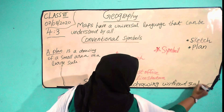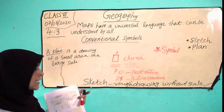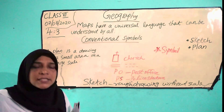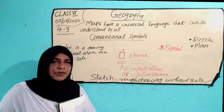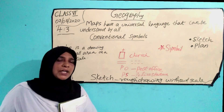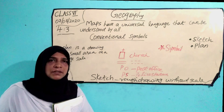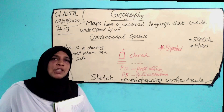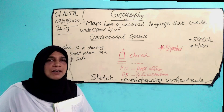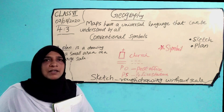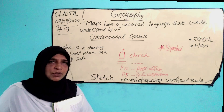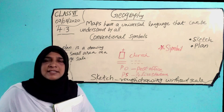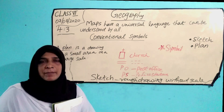Without scale. Sketch map is a rough drawing without scale. Suppose your friend invites you to his house and you don't know the way. Your friend makes a drawing about the way to his house — that is a sketch map.